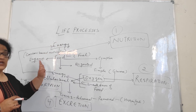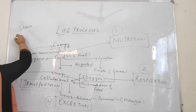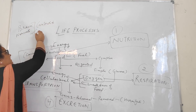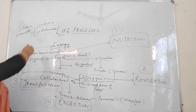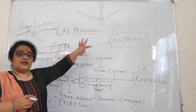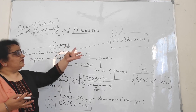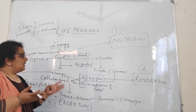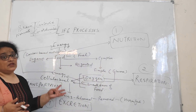All these life processes take place with the help of another system which includes the brain and nerves, and we call it control and coordination. So all these processes are the life processes that occur and play their role through molecular movement to sustain life. We will be dealing with each life process in detail — nutrition in plants, nutrition in animals, respiration in plants, respiration in animals, and transportation and excretion both in plants and in animals — in the next video.